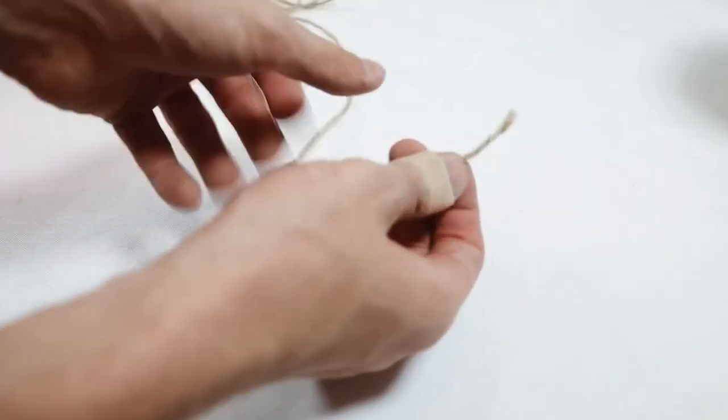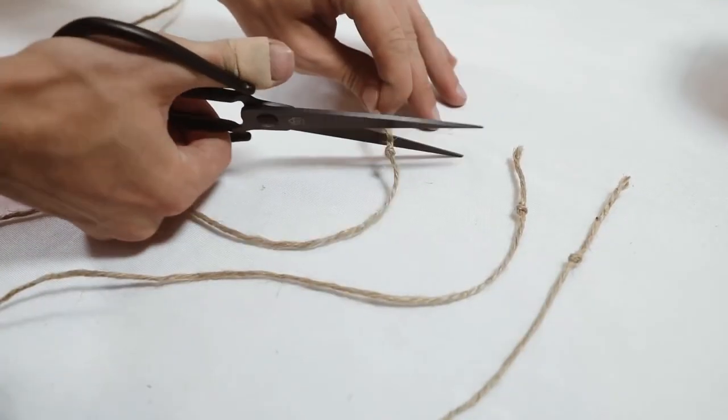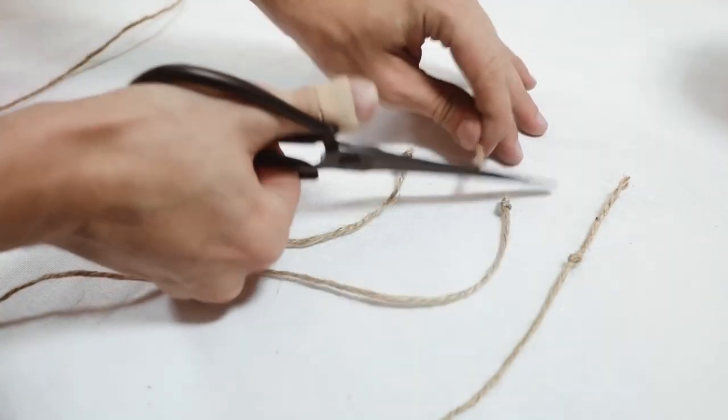Next I'm grabbing some hemp cording or whatever string you want the hanging planter to be hanging from, and you're going to tie knots onto the ends of them.